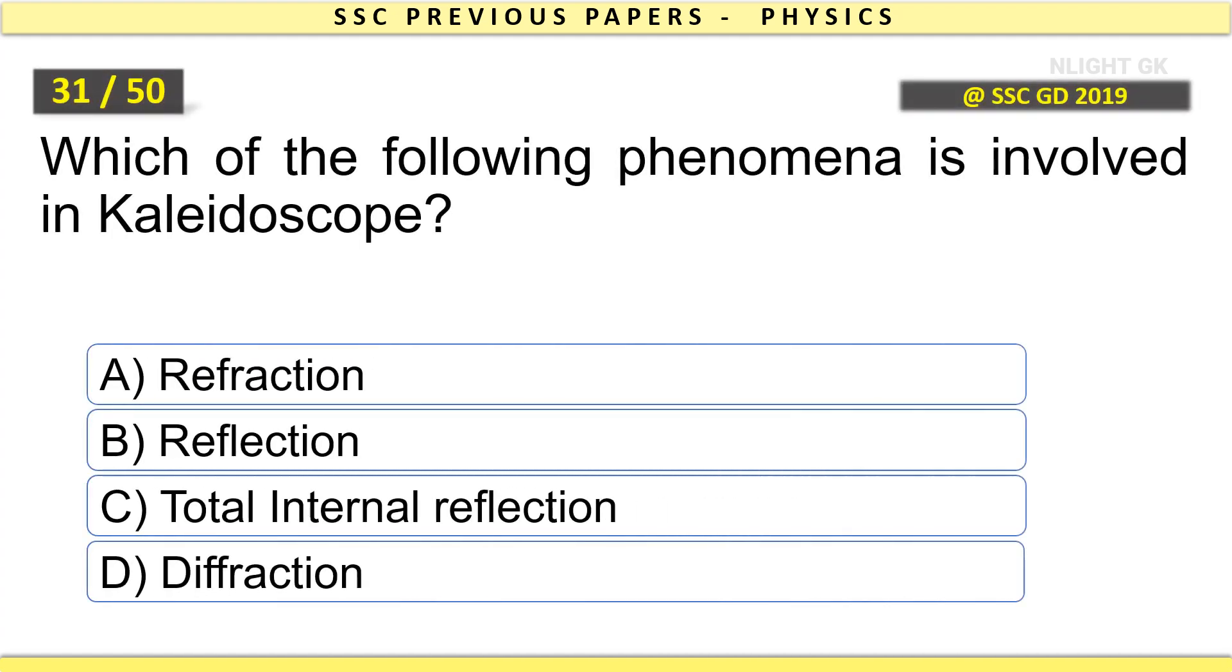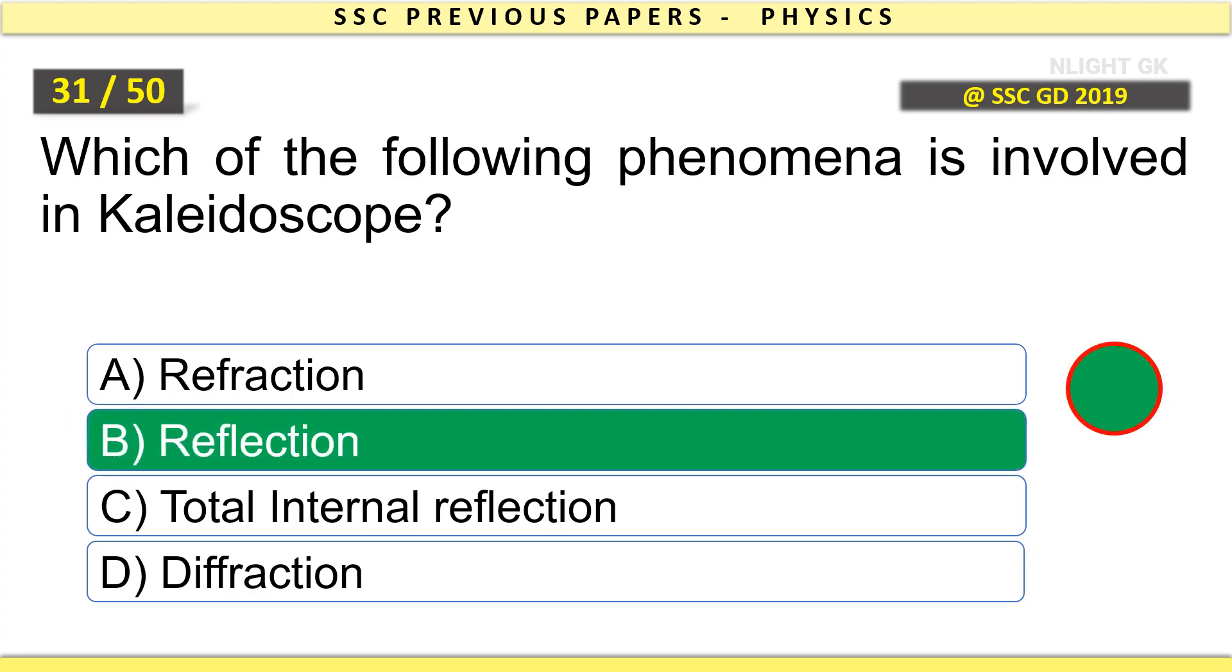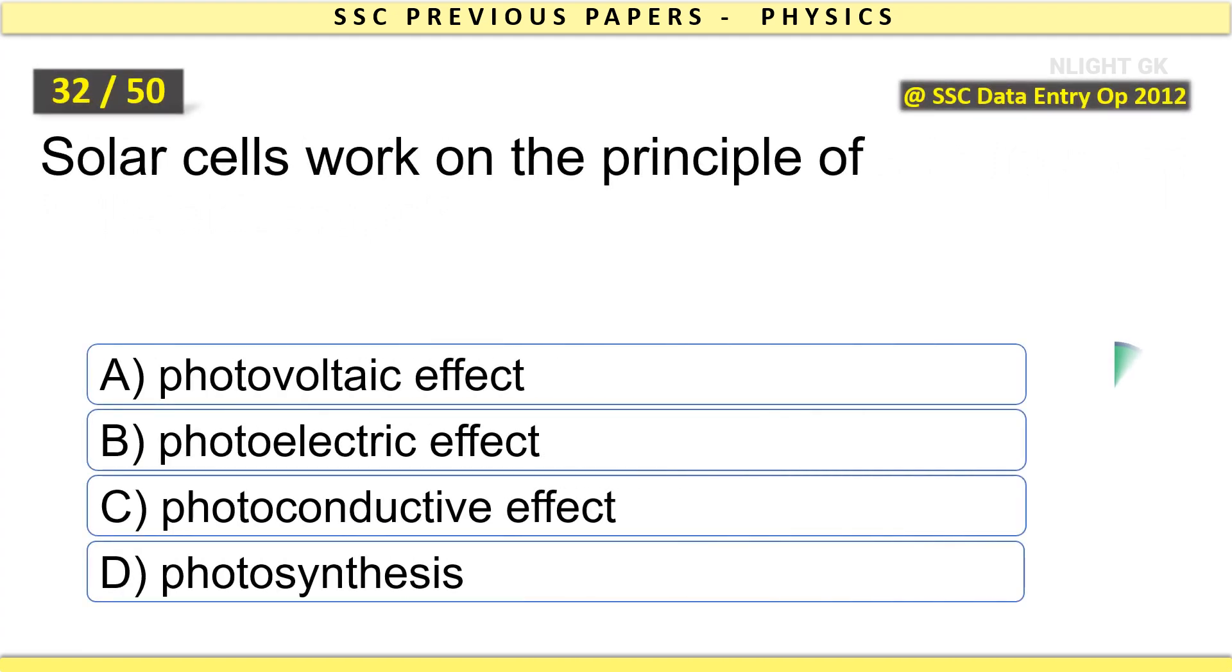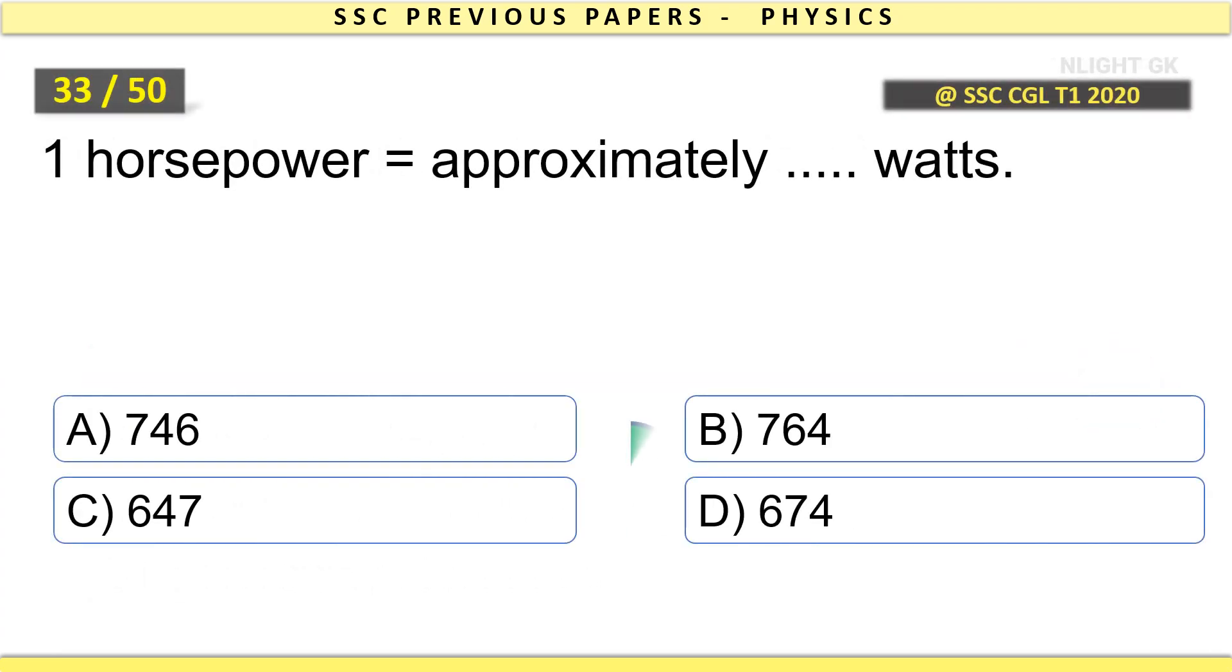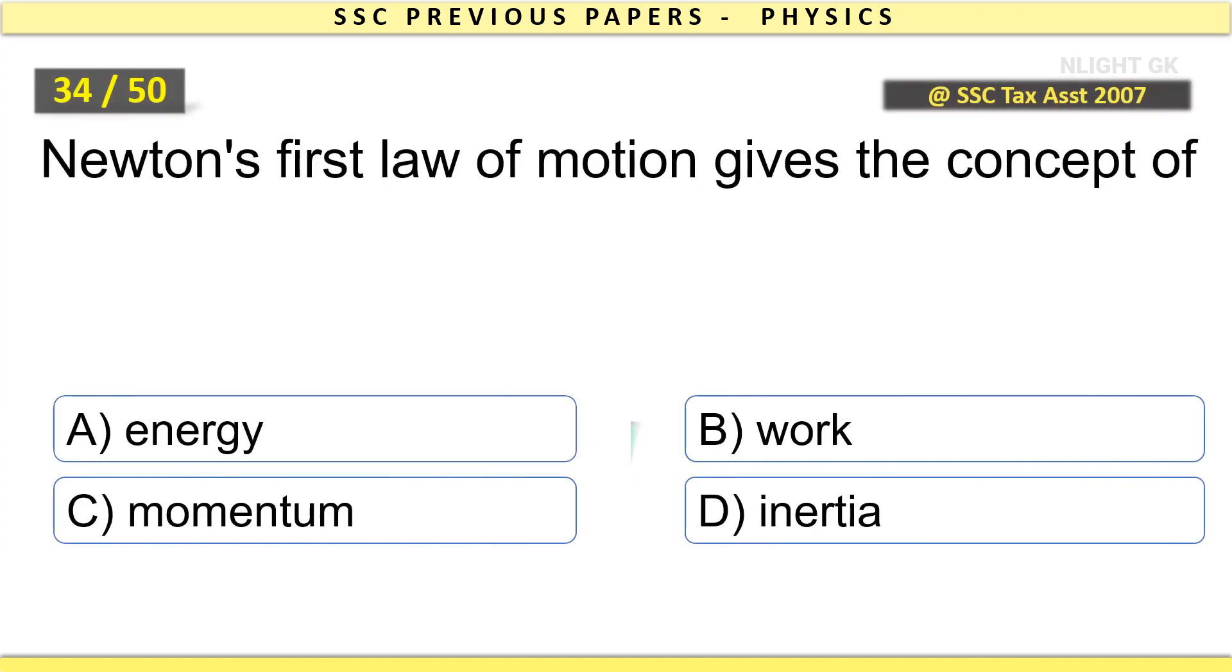Magnetism in materials is due to circular motion of electrons. How much mechanical work must be done to completely melt 1 gram of ice at 0 degrees Celsius? 80 Joules. Which of the following phenomena is involved in kaleidoscope? Reflection. Solar cells work on the principle of photovoltaic effect.